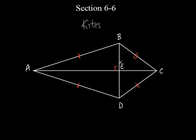Everybody got that? So those are two things we know about a kite. These two sides are equal, these two are equal, and the diagonals form a right angle. Here's something else that's true. Look at angle A and look at angle C. Do they look like they're equal to each other? Angle C looks a lot bigger than angle A.